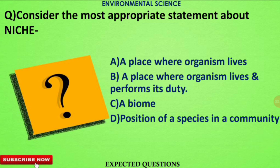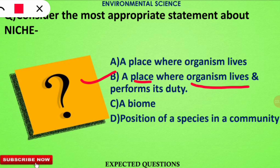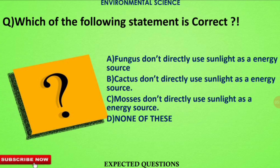The next question asks for the most appropriate statement about niche. The correct option is B. A niche is the place where an organism lives as well as performs its functional role in the ecosystem. It is not the same as habitat, where the organism merely resides.